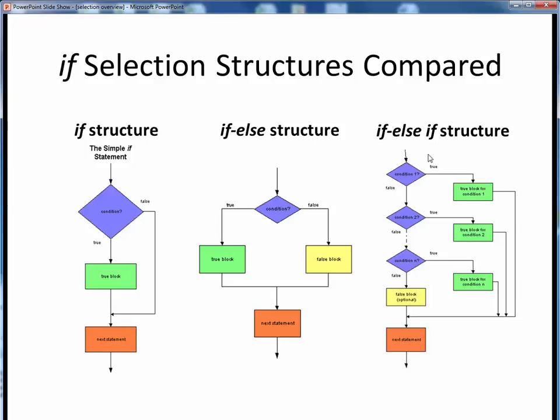Finally, the last example on the right shows the most general form, the if-else-if structure. Here, we see that there is a cascaded series of conditions which are evaluated, rather than just one. This first condition is evaluated, and if the condition is true, the set of statements in this first true block are executed.